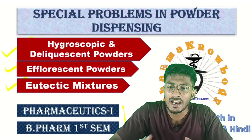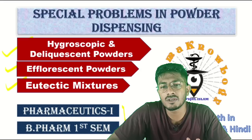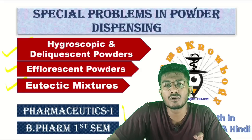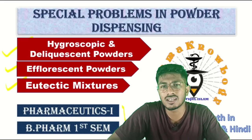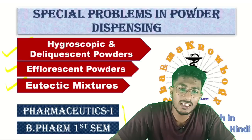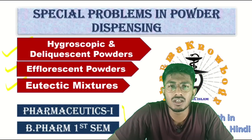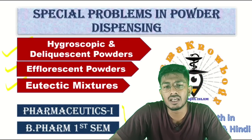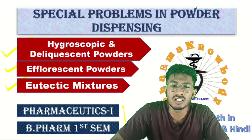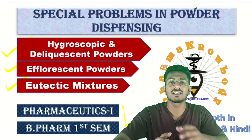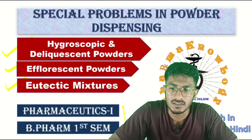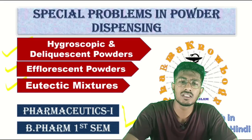When you go to higher classes, basically in physical pharmaceutics, you will understand these terminologies in detail. Especially eutectic mixture is an important topic in physical pharmaceutics where you will understand about the degree of freedom and the ways in which the combination can work as eutectic mixtures. All those things you will understand in higher classes.